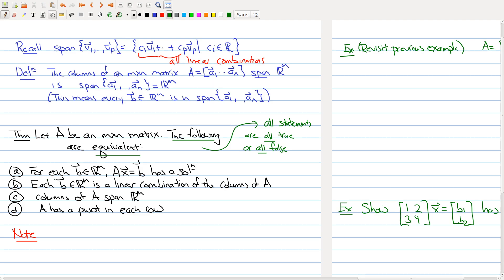So what it says is, for each b in R^m, you have a solution. So that's the question - when do you have a solution for every b? Well, the theorem says you will have a solution if b is a linear combination of the columns of A. But that is just another way of rephrasing, saying that the columns of A span R^m.